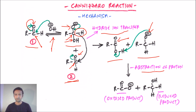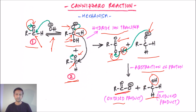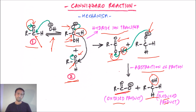In the third and final step — abstraction of a proton — the oxygen with a negative charge on the carboxylic acid abstracts a proton, shifting the bonding electrons onto oxygen, converting that molecule into RCOO⁻ (the carboxylate ion), which is the oxidized product. The O⁻ of the alkoxide abstracts a proton to become OH, giving alcohol as the reduced product. The Cannizzaro reaction thus completes in three steps: nucleophile attack, hydride transfer, and proton abstraction.